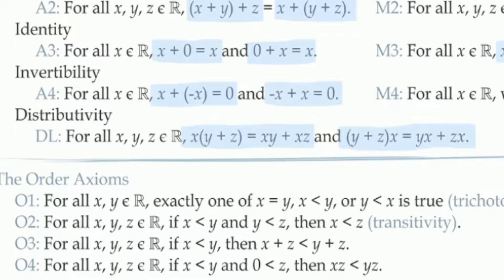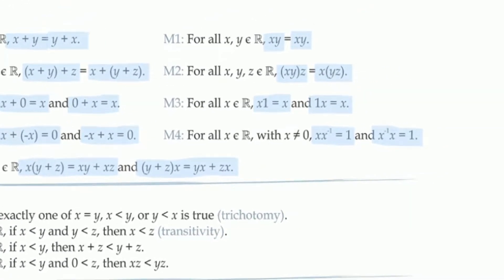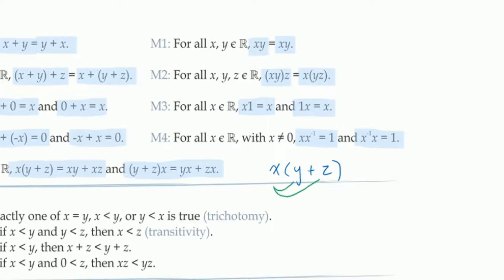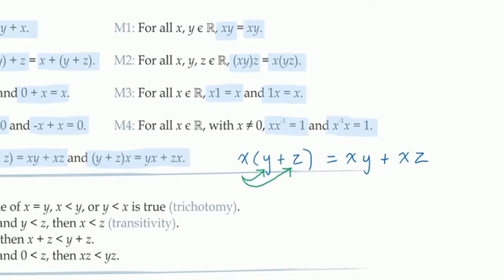It's important to note that the distributive law should be read in two directions. Reading it from left to right, it tells us that we can expand multiplication over addition. But it also tells us, reading it from right to left, that if we see a common factor in two terms that are being added, we can factor out the common number.